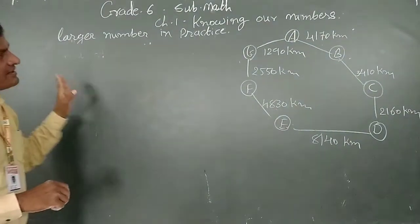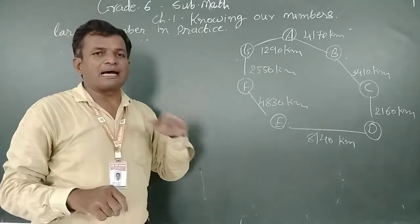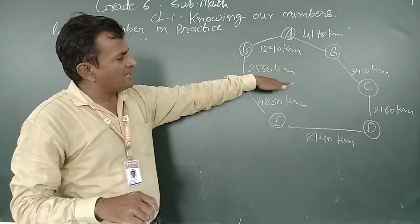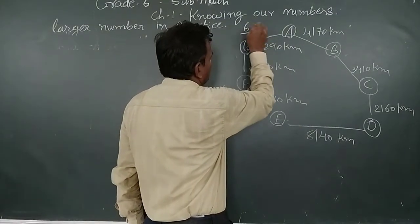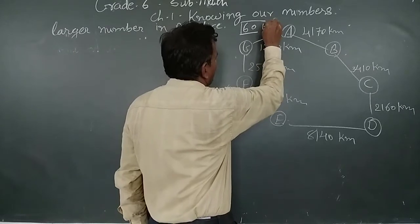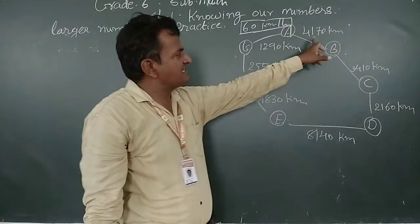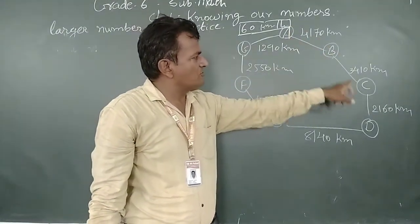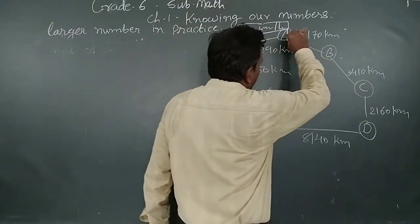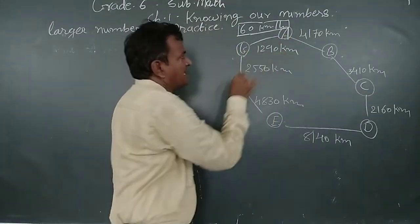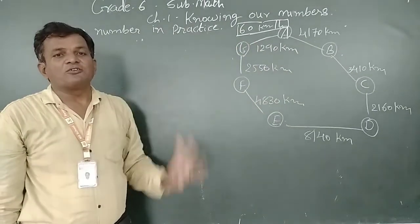Now we are learning with an example. A bus is starting from A to B, B to C, and C to D. The bus speed is given as 60 kilometers per hour. The distance from A to B, B to C, C to D is given. We want to find out the total distance. If we find out the distance between A to C, we add A to B and B to C. The distance of A to B is 4170 kilometers, and B to C is 3410 kilometers. We add both.